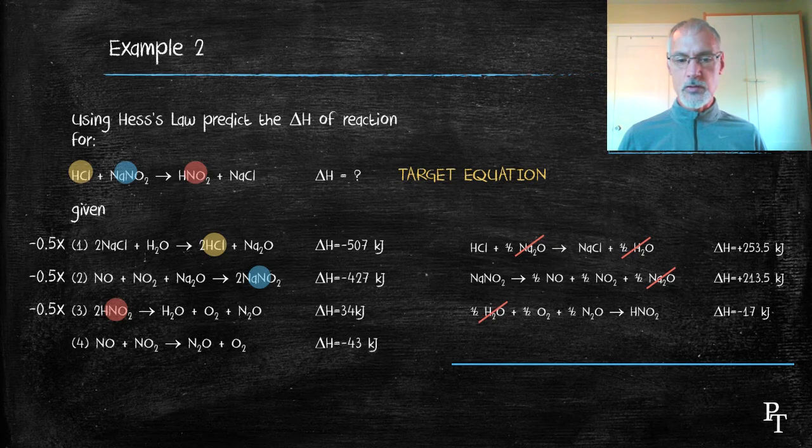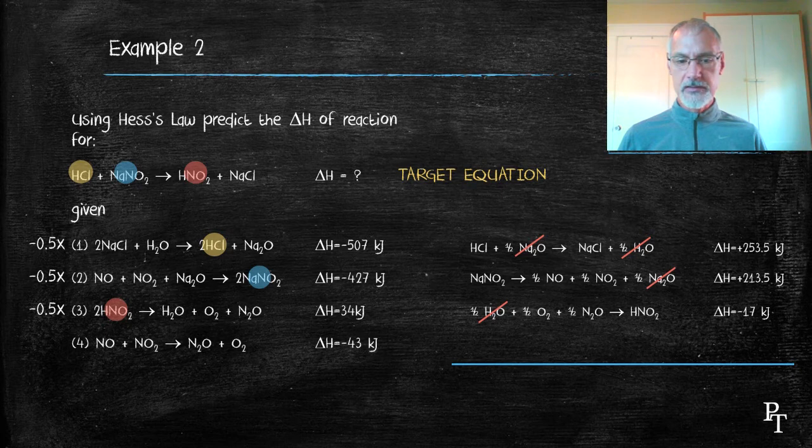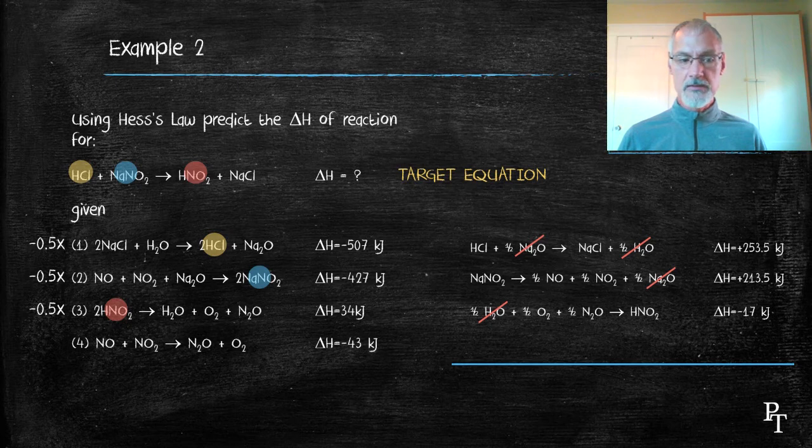And if I was to add the equation together at this point, I would see the presence of oxygen, dinitrogen oxide, nitrogen dioxide, nitrogen monoxide. All of these chemicals would now be present that aren't in my target equation.